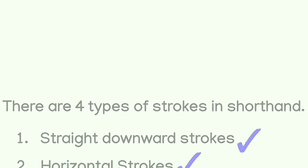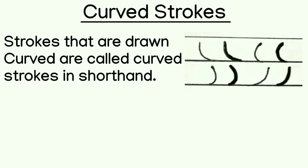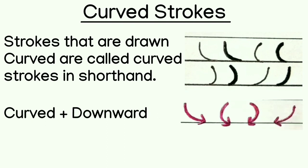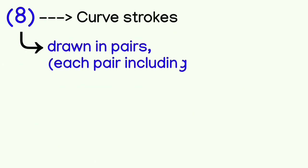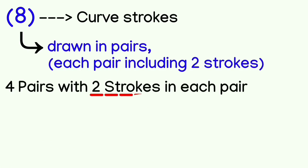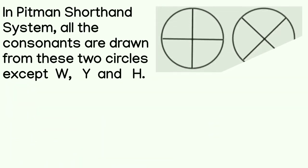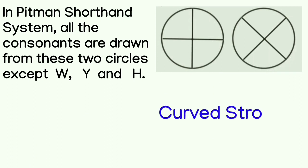So our topic today is Curve Strokes. In shorthand, we always use curve strokes in a downward direction. In shorthand, there are a total of 8 curve strokes which are always made in 2-2 strokes — a total of 4 pairs, each pair having 2 strokes. We will draw all the curve strokes within two circles. Only V, Y, and H consonants will not be drawn in these two circles; all other consonants will be drawn in these two circles.